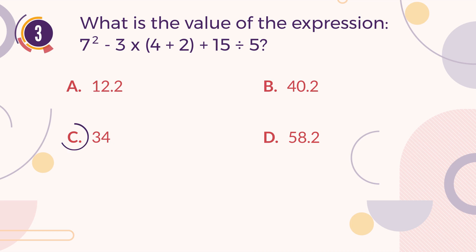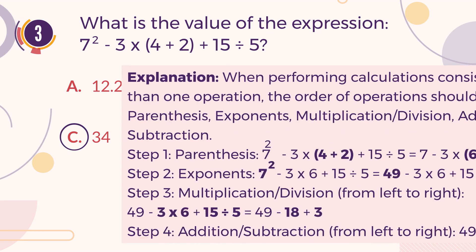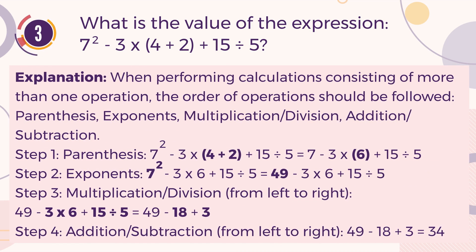The correct answer is C. 34. Explanation. When performing calculations consisting of more than one operation, the order of operations should be followed: parentheses, exponents, multiplication or division, addition or subtraction. Step 1, Parentheses: The 4 plus 2 inside the parentheses equals 6. Step 2, Exponents: 7 squared equals 49. The expression now can be written as 49 minus 3 multiplied by 6, plus 15 divided by 5.